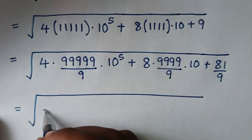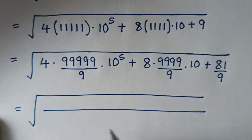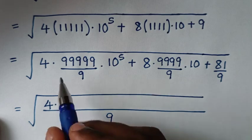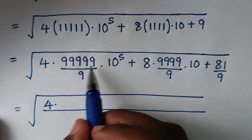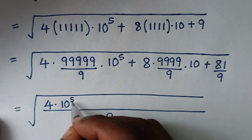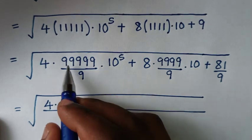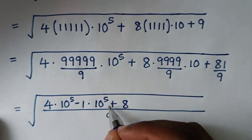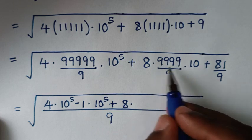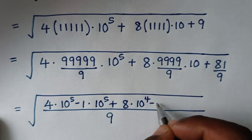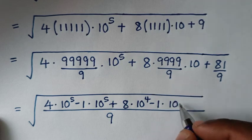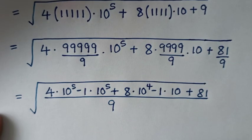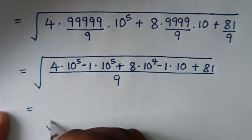Using the LCM, here it will be: 4 times — there are five 9s — which is 10 to the power 5 minus 1, times 10 to the power 5, plus 8 times — there are four 9s — which is 10 to the power 4 minus 1, times 10, plus 81, all over 9 as the denominator. So it will be equal to the square root of this.